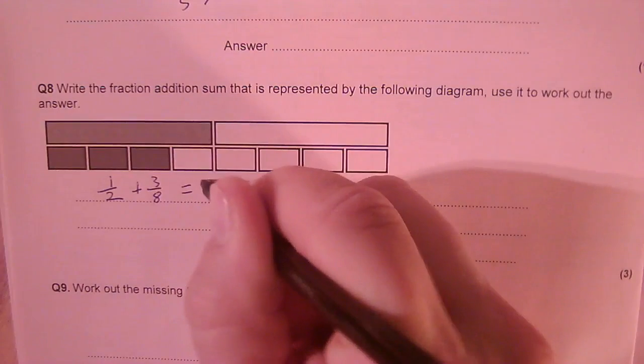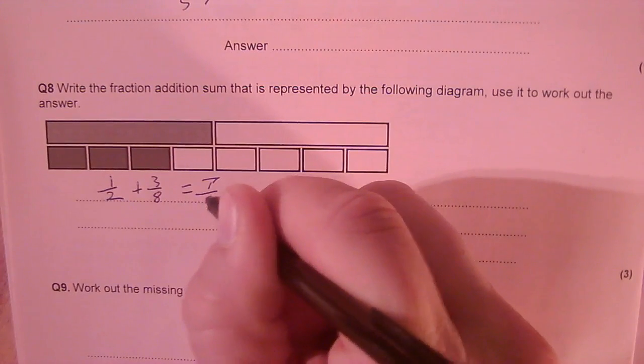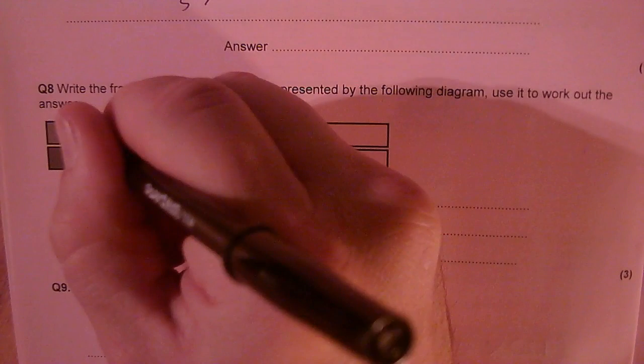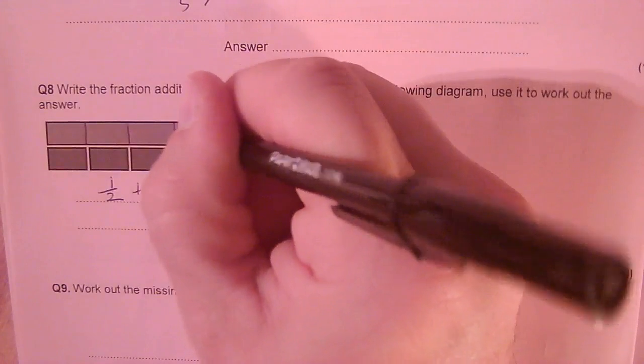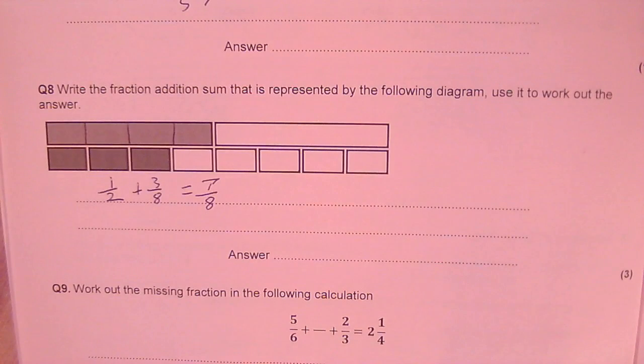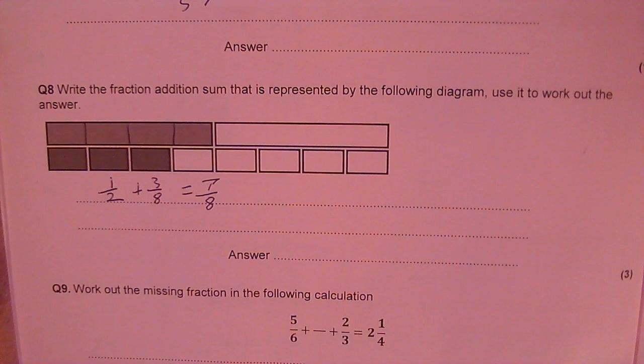Equals seven eighths, because I could break that into sort of four equivalent bits, and then I can see I've got a half plus seven eighths.